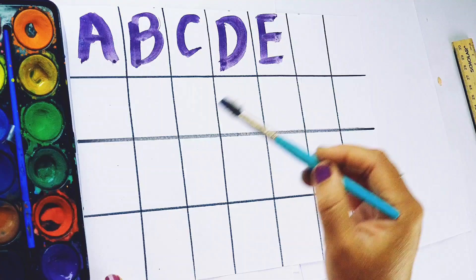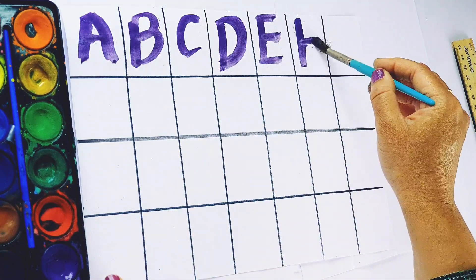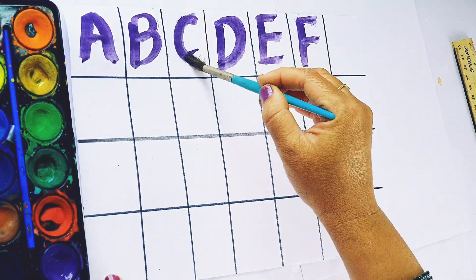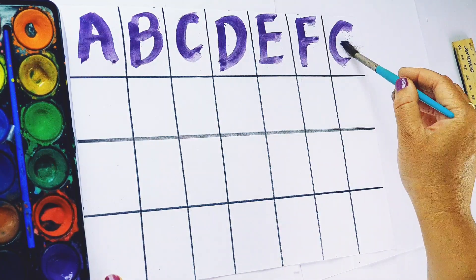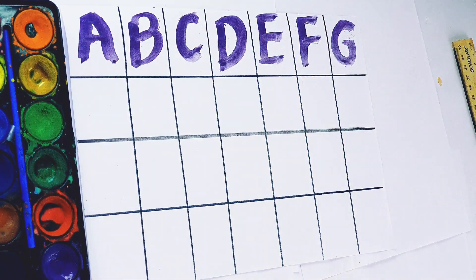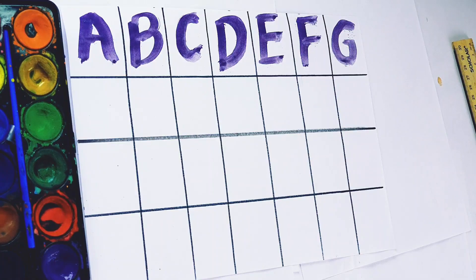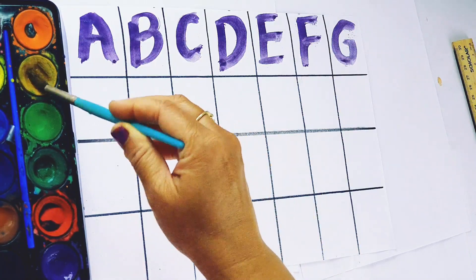F, F for fish. G, G for goat. Yellow color.